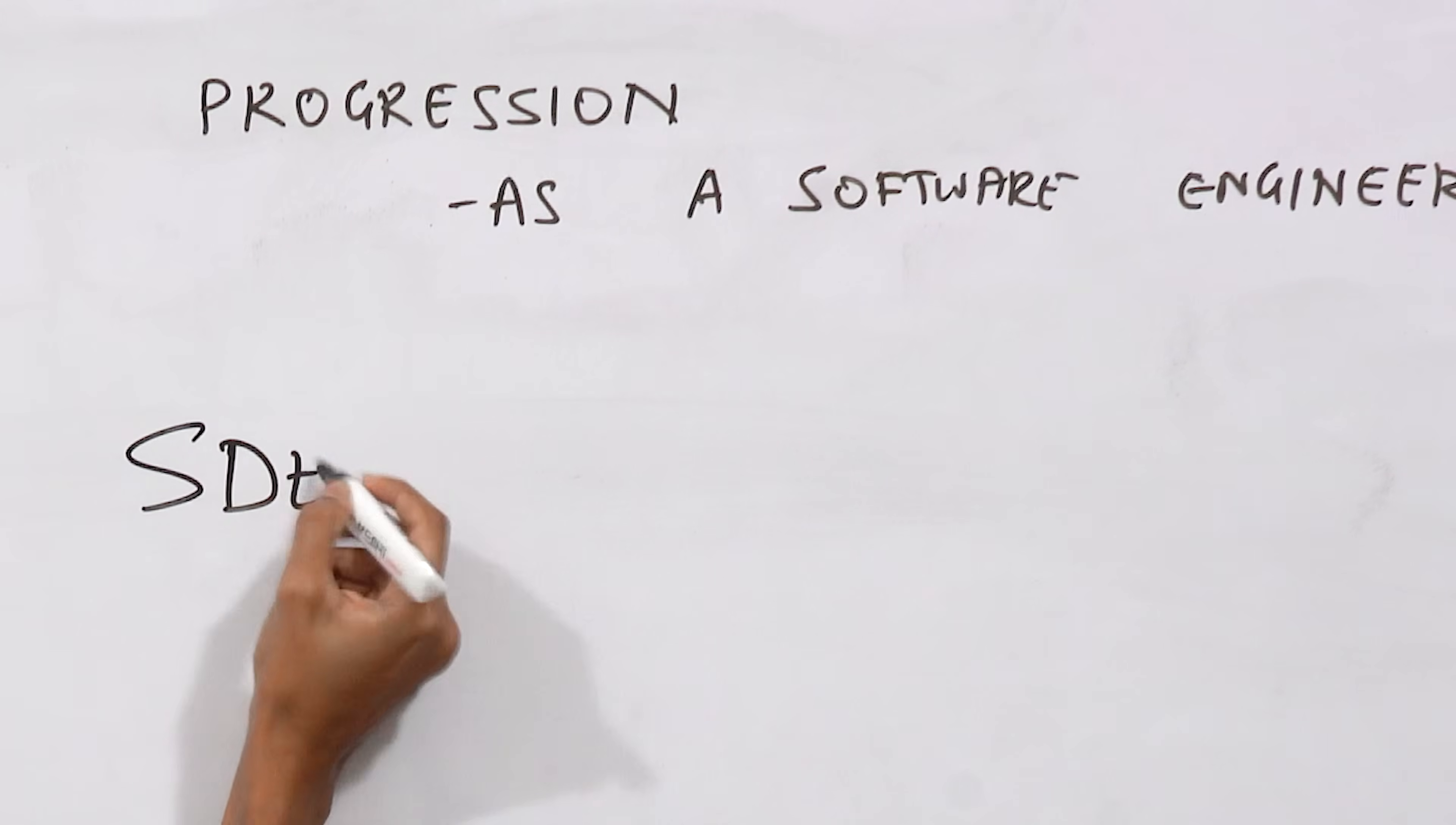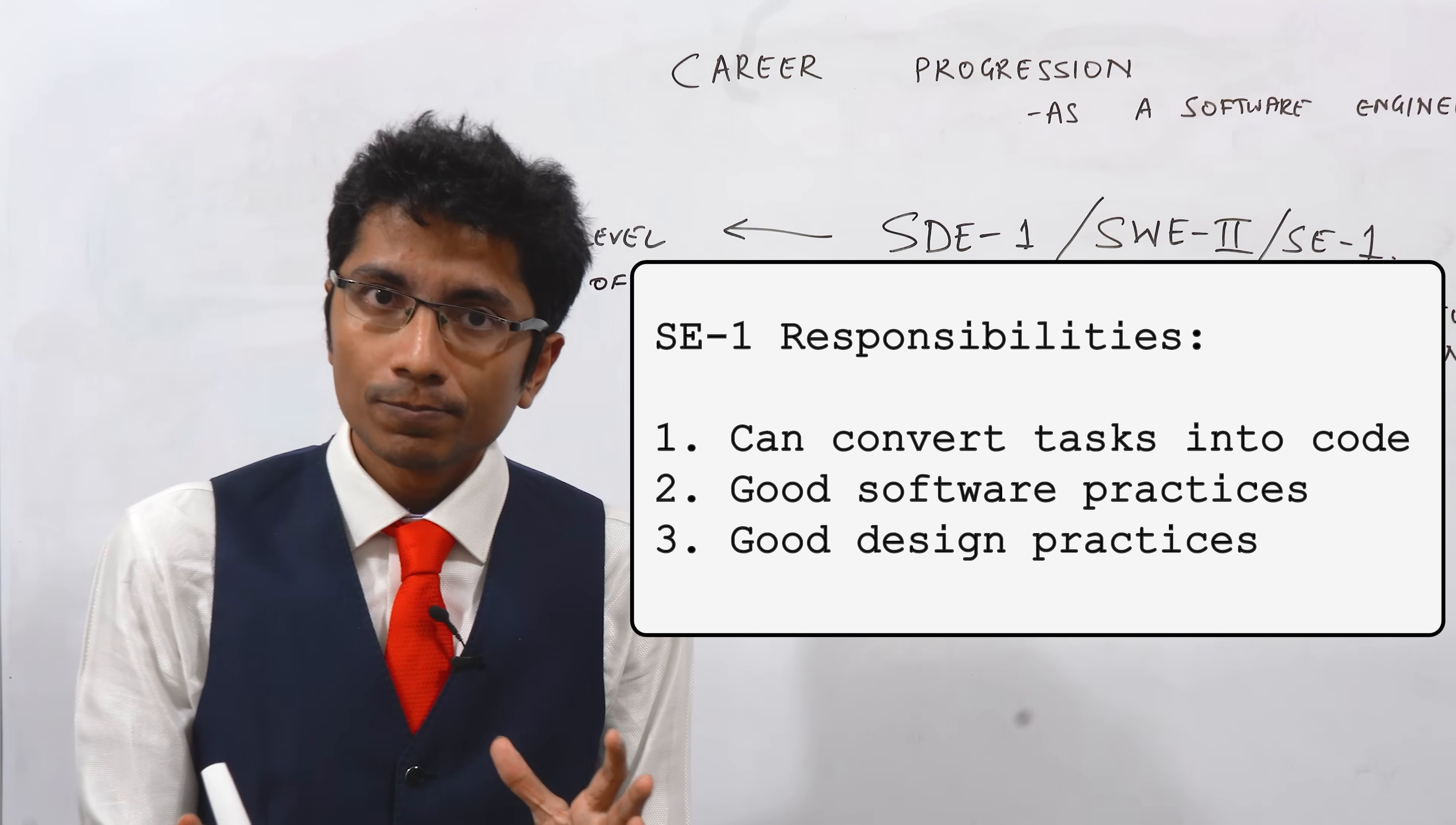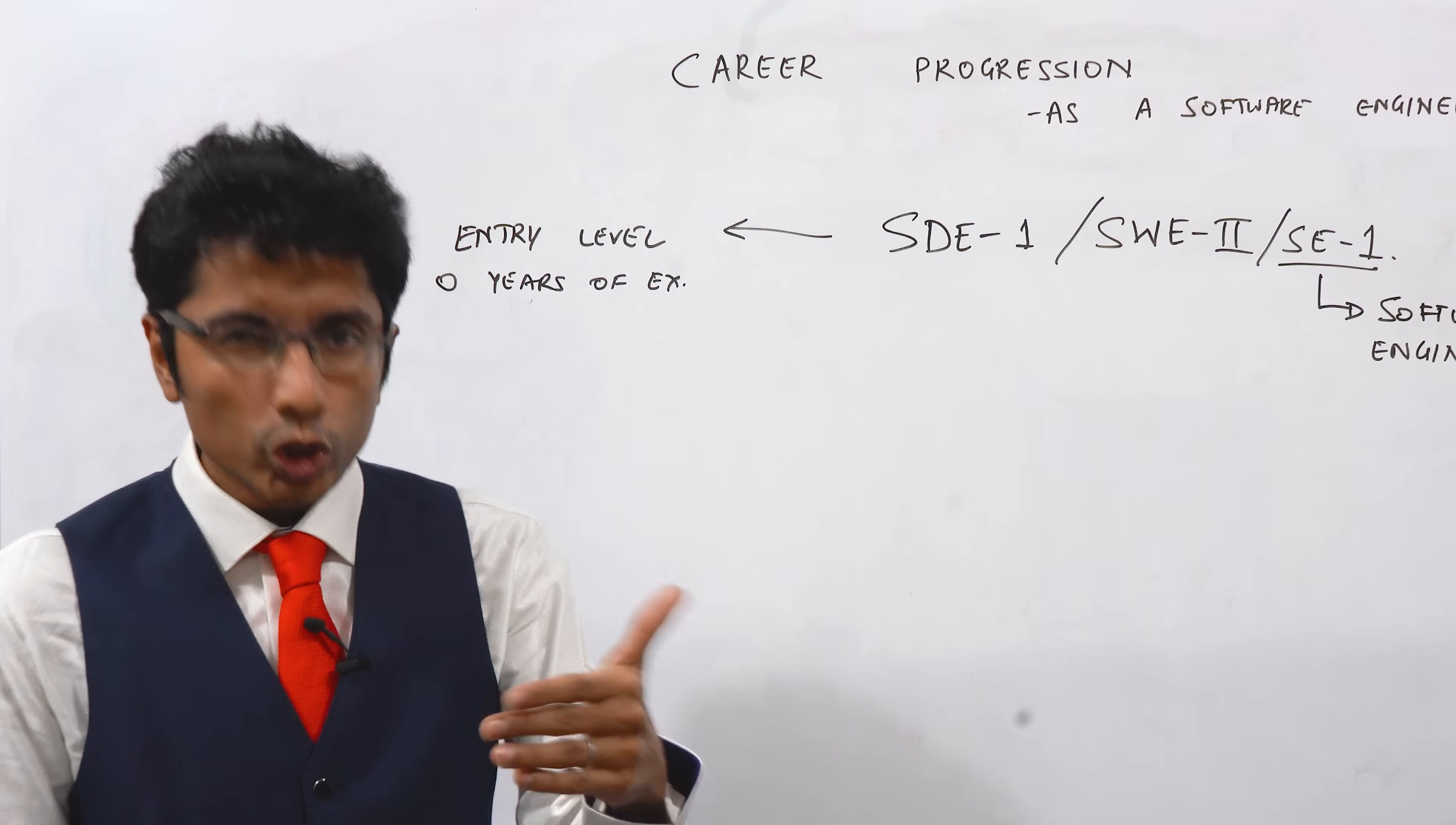The first position is SDE1 with zero years of experience at entry level. What does an SD1 do or what are they expected to do? An SD1 is expected to code well, which means that if given an assignment, given that you have to write two or three APIs because of a business requirement, you will be able to write those APIs. The code inside it will be good. If there is any design pattern required, then you should be able to implement it.